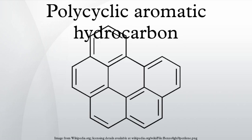Smaller molecules such as benzene are not PAHs, and PAHs are not generally considered as containing heteroatoms or carrying substituents. Hence, PAHs may contain four, five, six, or seven member rings, with those containing five or six being most common.